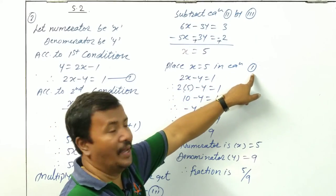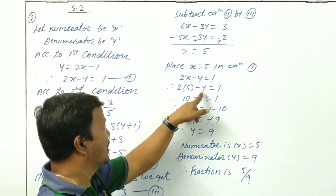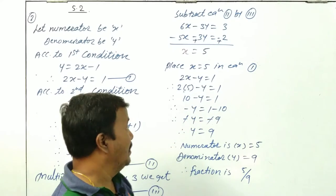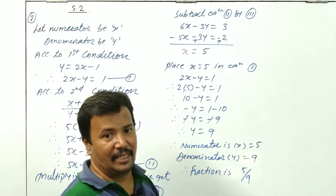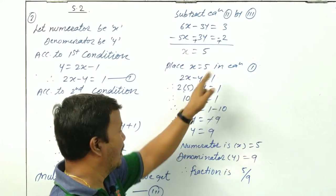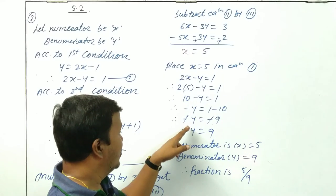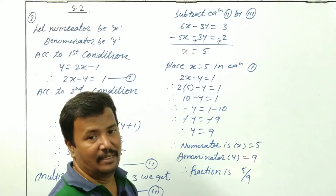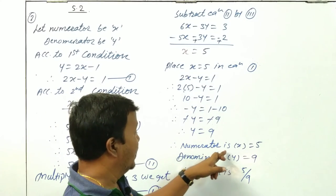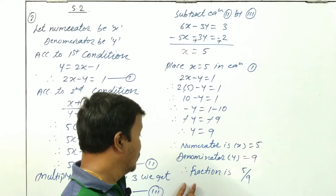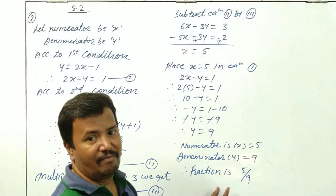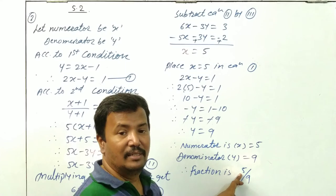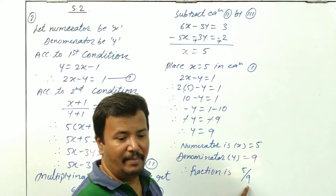Substituting x equals 5 in Equation 1: 2 into 5 minus y equals 1, so 10 minus y equals 1, giving minus y equals 1 minus 10, so minus y equals minus 9, therefore y equals 9. The numerator is x equals 5 and the denominator is y equals 9, so the fraction is 5 upon 9. Verification: y equals twice of x minus 1 means 2 into 5 minus 1 equals 10 minus 1 equals 9. Correct.